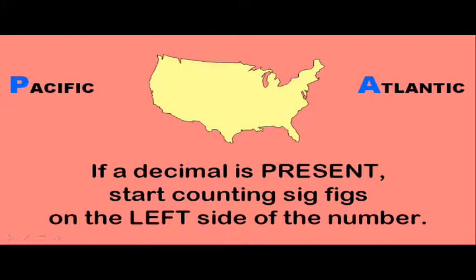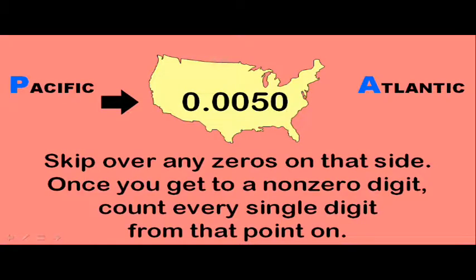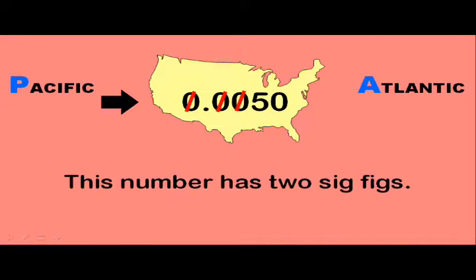Now if a decimal is present, we start counting the sig figs on the Pacific Ocean side of the number. In this case, the number is 0.0050. Once we skip over the leading zeros on the left side of the number, and we come to a non-zero digit, we count every single digit from that point on. Therefore, this measurement has exactly two significant figures.